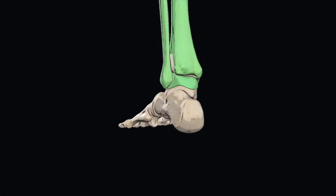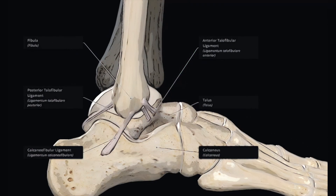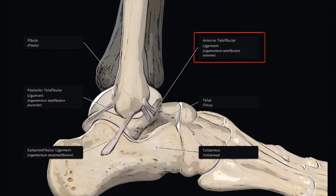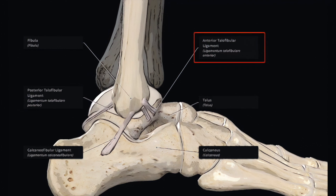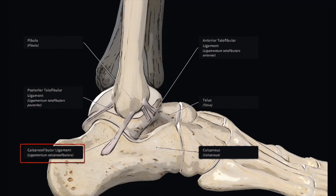The lateral ligament complex is comprised of the posterior talofibular ligament — a strong, thick ligament running between the malleolar fossa of the lateral malleolus and the posterior talus — the anterior talofibular ligament, a flat band running between the tip of the lateral malleolus and the neck of the talus, and the calcaneofibular ligament, a cord-like ligament running between the lateral malleolus and the lateral calcaneus. The ATFL is the weakest and most likely to be injured during forced plantarflexion and inversion, followed by the CFL, or calcaneofibular ligament, which is stressed during pure inversion of the subtalar joint.